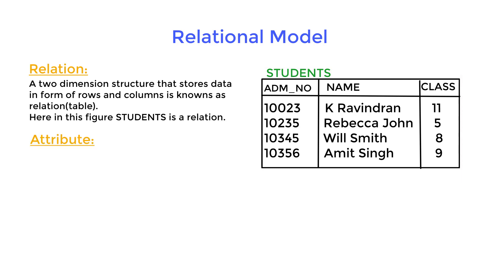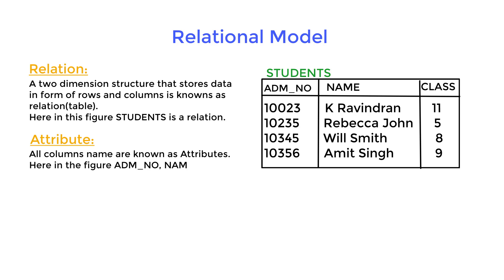Attribute: all column names are known as attributes. Here in this figure, admission number, name, and class are attributes of the relation student.